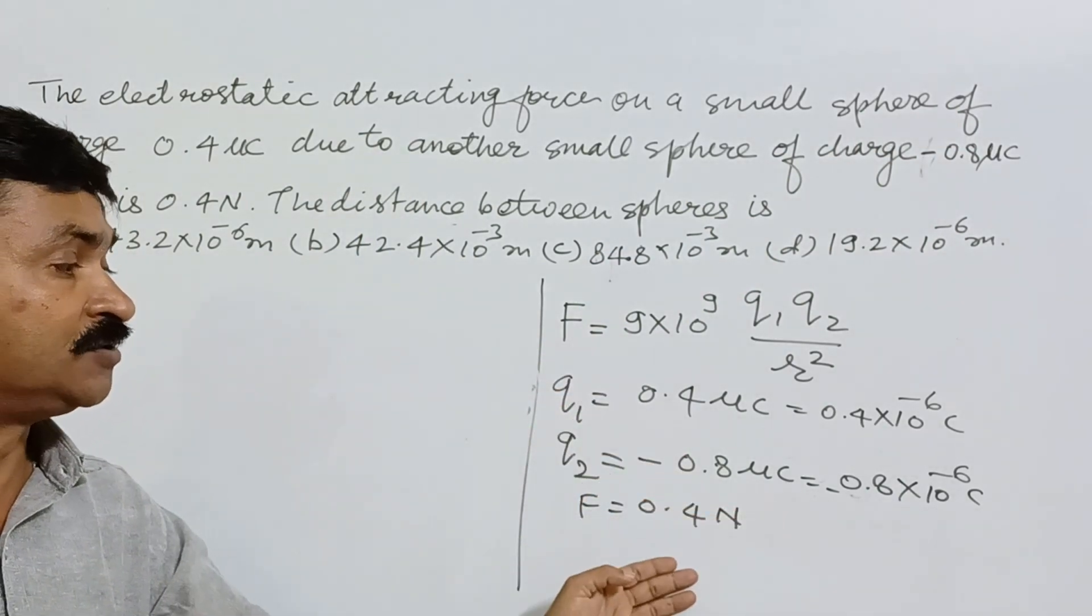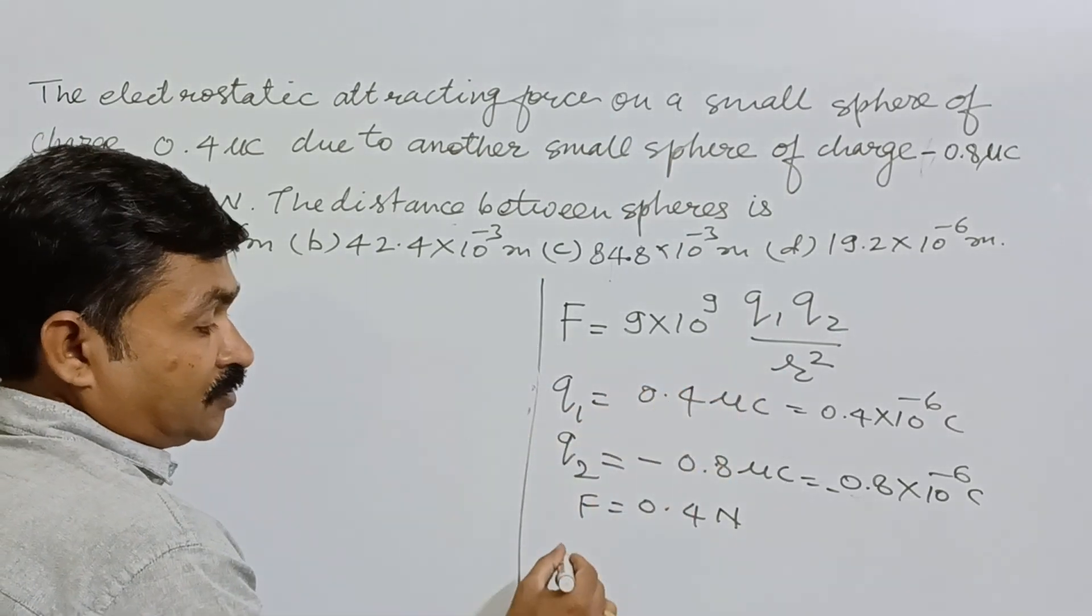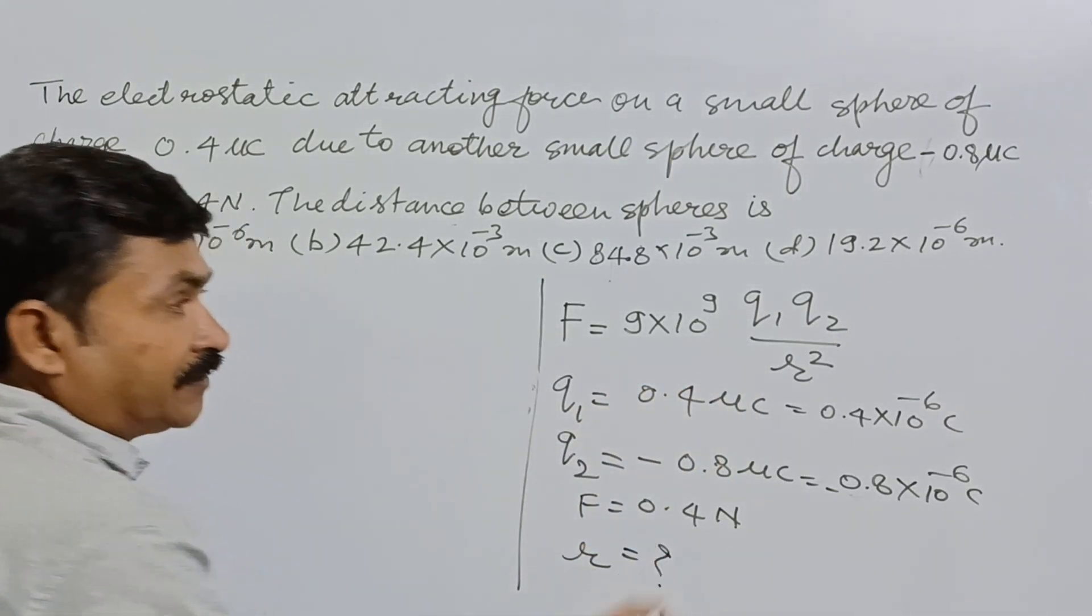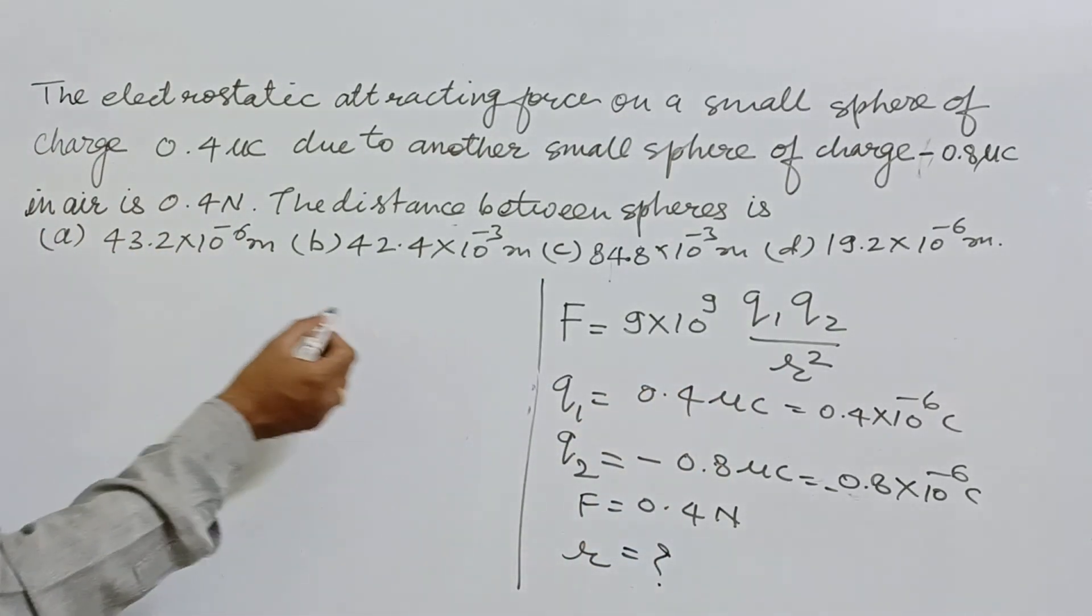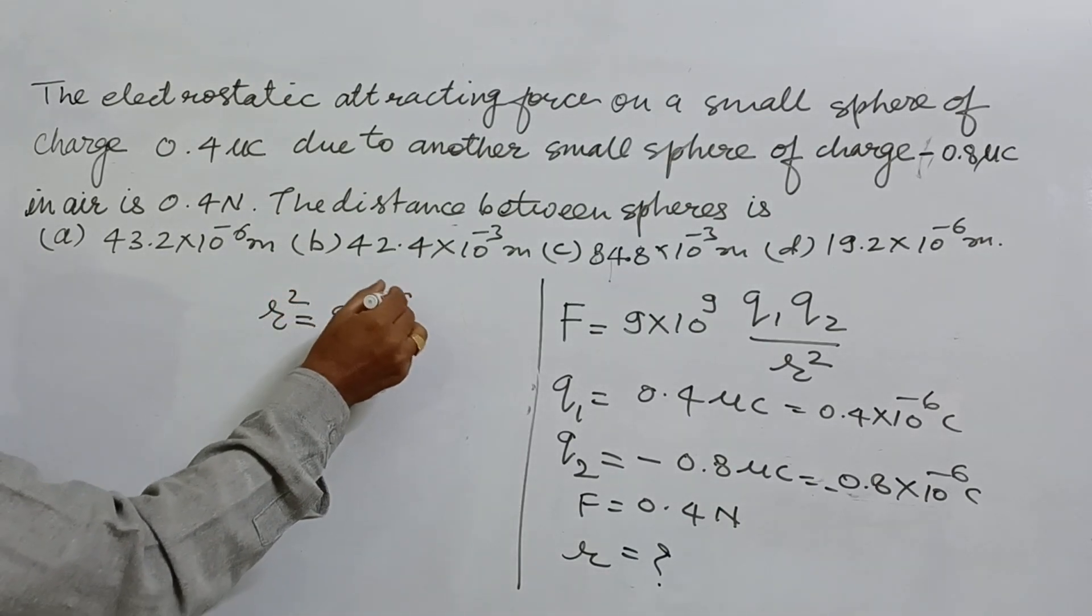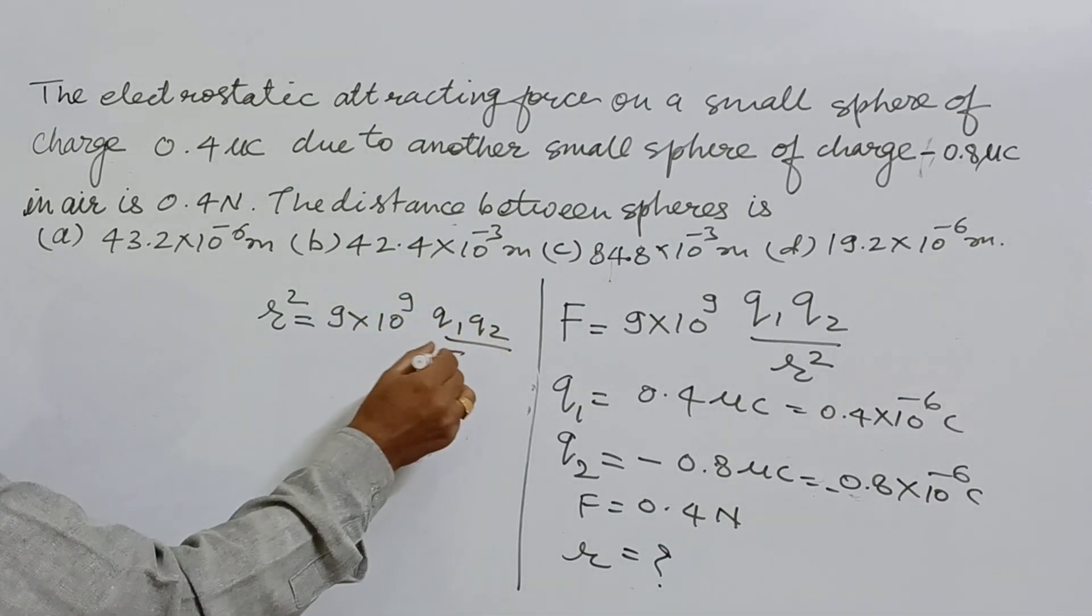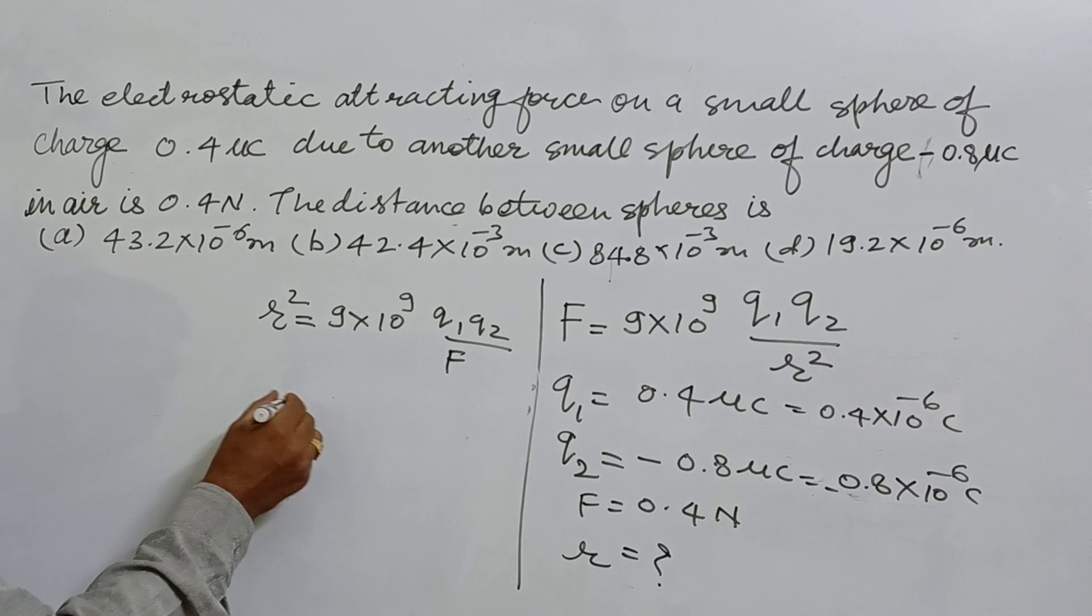We have to calculate the distance between them, so r that we have to determine. Here we can have r² = 9×10⁹ × q₁q₂/F. Now we know all the values so we'll substitute: 9×10⁹ × 0.4×10⁻⁶...